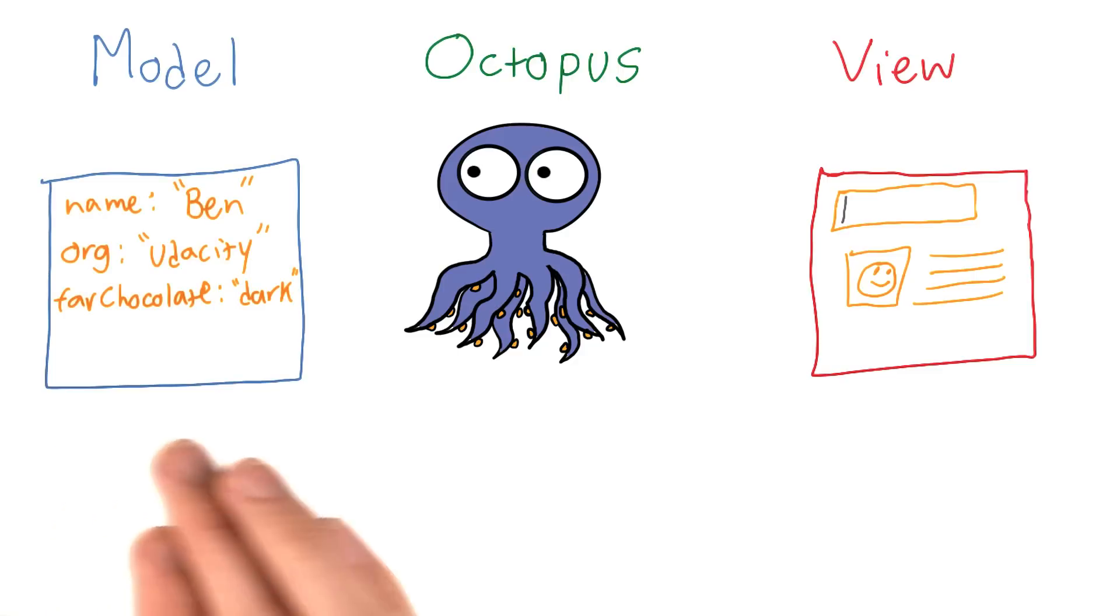Now, speaking of data, here in the model, this is where all of the data is stored. That includes data from the server and from the user.